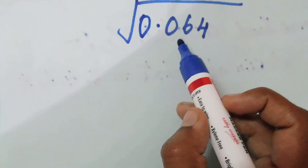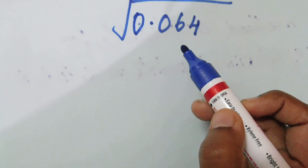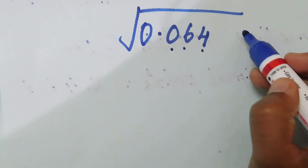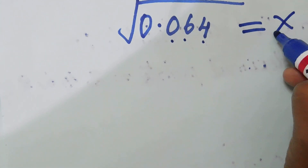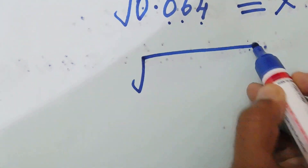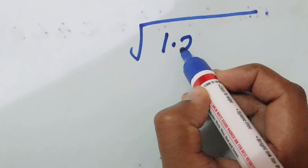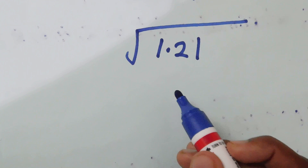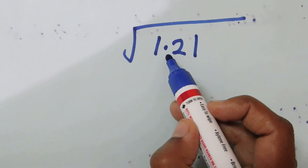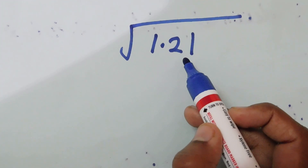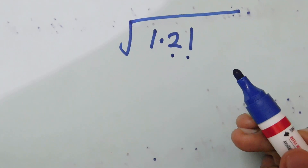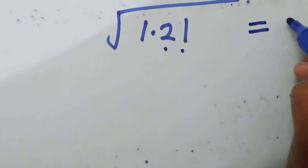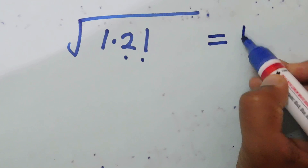Let's check the even number and the number of digits. Let's count: 1, 2, 3. Let's count: 1.21. Let's count: 1, 2. Let's count: 1, 2, 1.